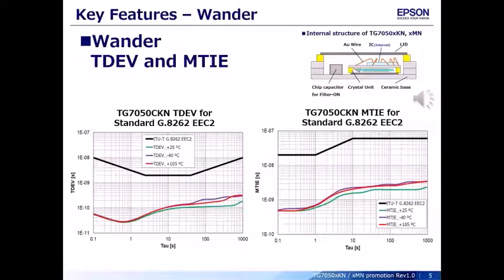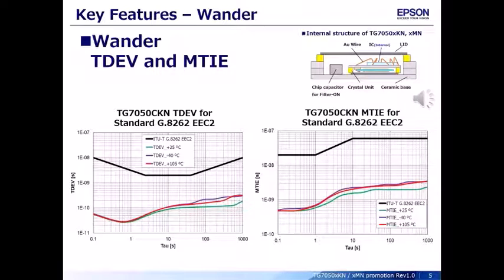Wander is defined as the influence of slow phase and frequency fluctuations in the range from DC to 10 Hz. The International Standardization Organization ITU-T specifies the standard for Wander using two measurements: TDEV (time deviation) and MTIE (maximum time interval error). Wander can comprehensively evaluate characteristics such as frequency-temperature characteristics, frequency-temperature slope, and phase noise.